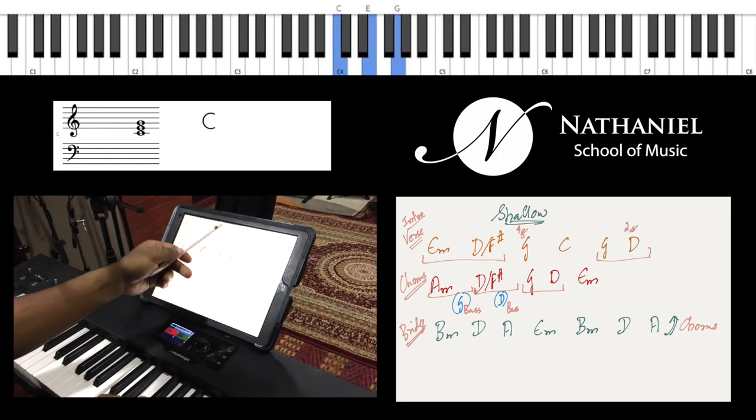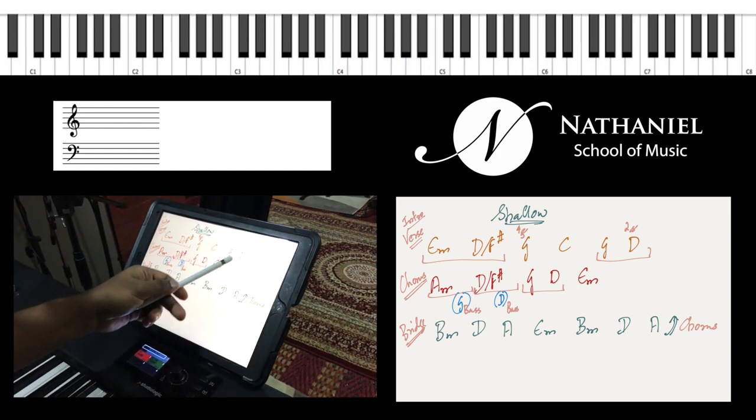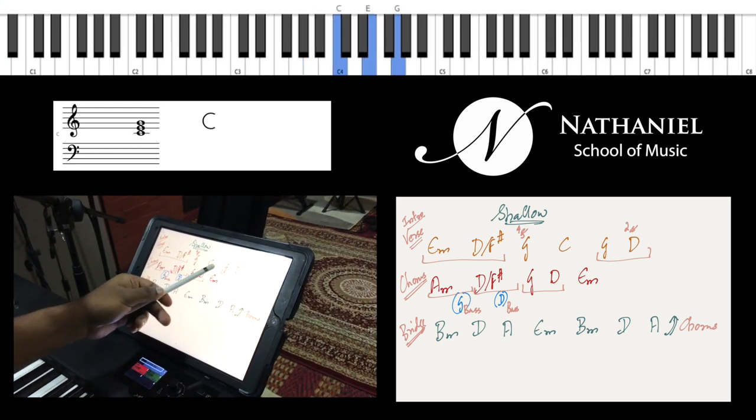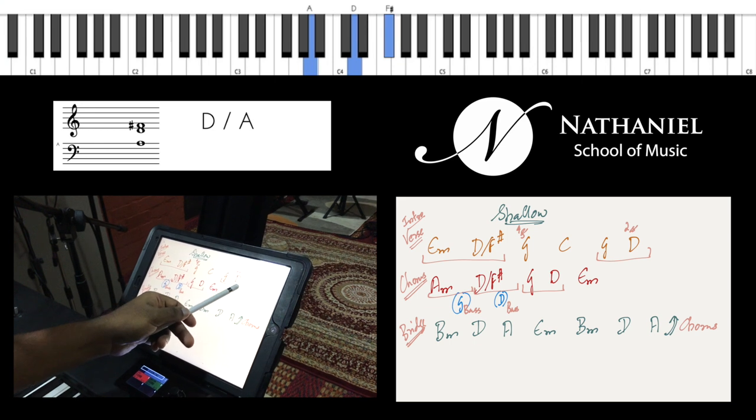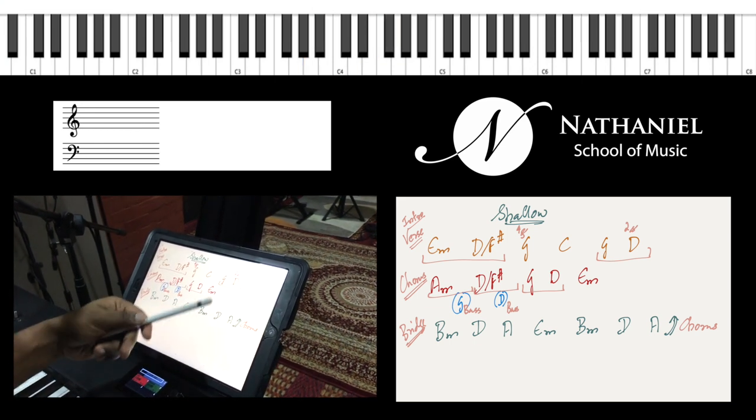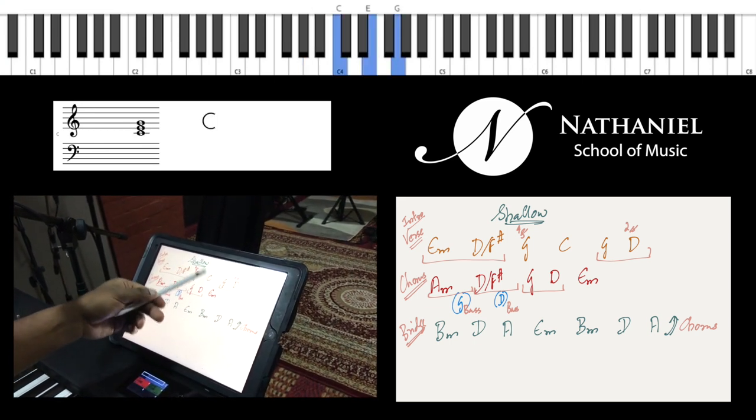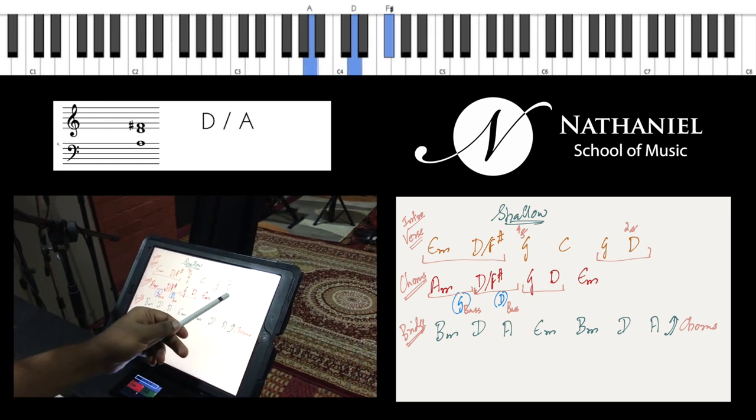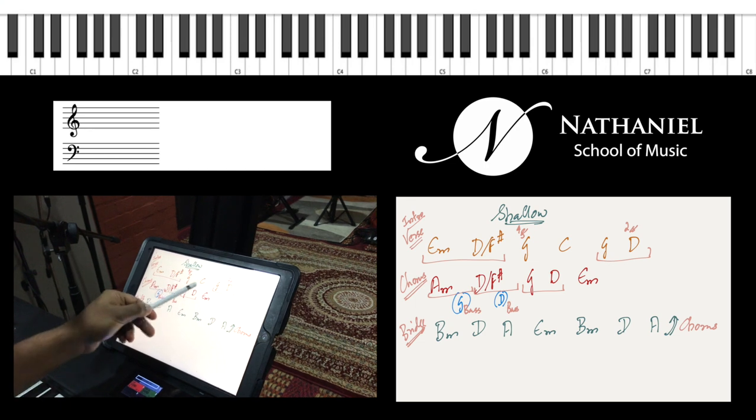Same thing. 1, 2. So that C four times, G twice, D. And then this D also comes in at the offbeat. 1, 2, 3, 4. 1, 2 and 3 and 4. So this is at the and of 2. This is at the and of 4.